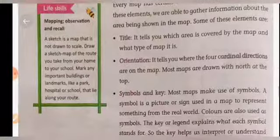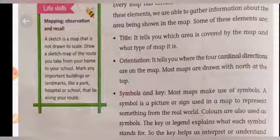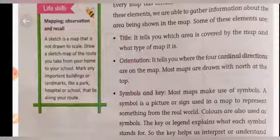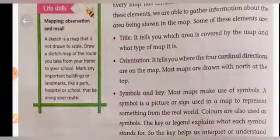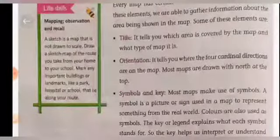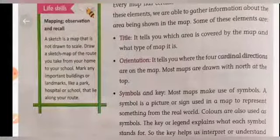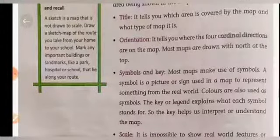The next element is symbols and keys. Most maps make use of symbols. A symbol is a picture or sign used on a map to represent something from the real world. Colors are also used as symbols. The key or legend explains what each symbol stands for, and it helps us interpret and understand the map.